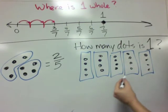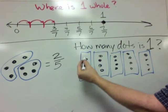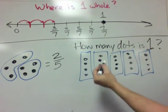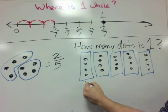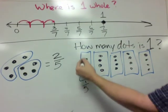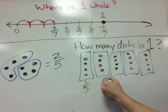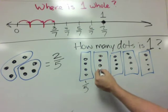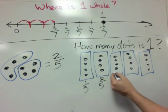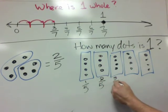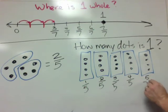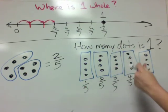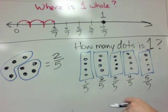So if we want to know how many dots are in one whole, that means we're going to have five equal parts, with four dots in each part — each fifth. And that means altogether there are going to be twenty dots in one whole. Here's one-fifth with four dots, another fifth with four dots, another fifth, another fifth, and finally five-fifths is equal to twenty dots.